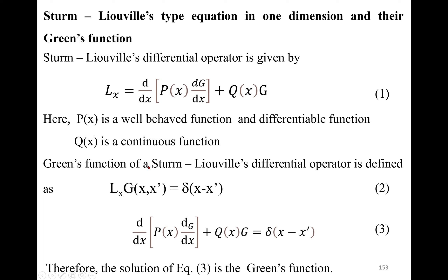Green's function of a Sturm-Liouville differential operator is defined as follows — a very important concept. The differential operator operates on the Green's function to give the Dirac delta function. The Green's function has two variables x and x'. Similarly, the Dirac delta function is δ(x − x'). When x equals x', the answer is 1; elsewhere it is 0.